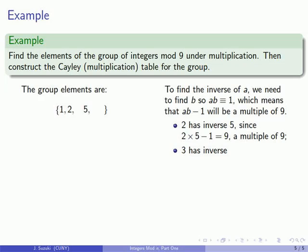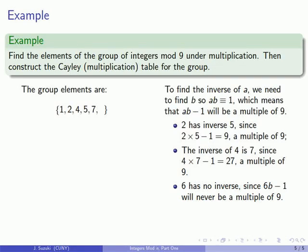3 on the other hand does not have an inverse because you can't find a value for b for which 3b minus 1 is going to be a multiple of 9. How about 4? Since we know inverses are unique we know the inverse of 4 is not 2 or 5 and since 3 is not even in the group it's definitely not going to be 3. So that means we have to look at the other numbers and with a little bit of trial and error we find that the inverse of 4 has to be 7 because 4 times 7 minus 1 is 27 which is again a multiple of 9. 6 again is not something that has an inverse because we cannot solve 6b minus 1 is a multiple of 9.